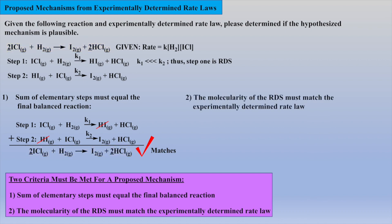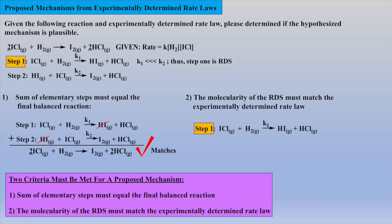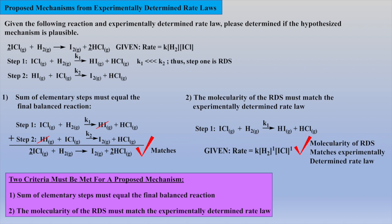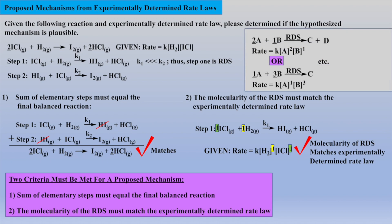Now let's check the molecularity of the RDS and see if it matches the experimentally determined rate law. The rate constant for step one is much less than the rate constant for step two; thus, step one is the RDS. Notice that the molecularity of step one matches the experimentally determined order for each reactant, which is first order with respect to H2 and first order with respect to ICl. Thus, this hypothesized mechanism may be correct. The molecularity of the RDS can be thought of as the number of reactants or intermediates that must collide in that step, which loosely translates to the stoichiometry of the RDS matching the order for each reactant in the experimentally determined rate law.